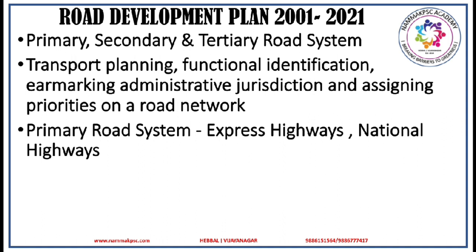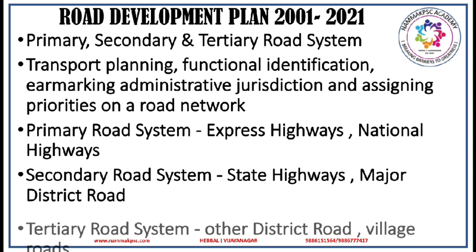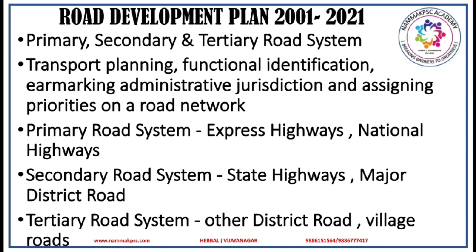The primary road system consists of express highways and national highways. The secondary road system consists of the state highways and major district roads, and the tertiary road system consists of other district roads and village roads. The secondary road system and tertiary road system together are known as rural roads since they represent the links to the rural areas of the country.